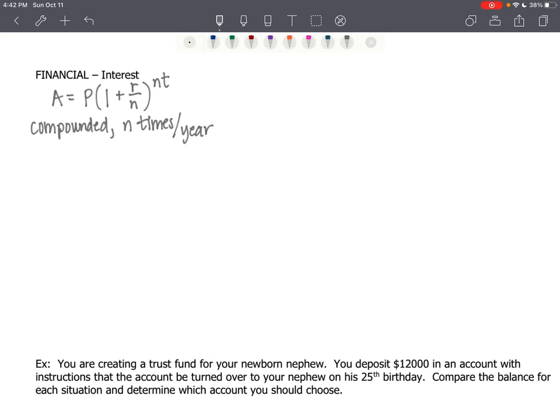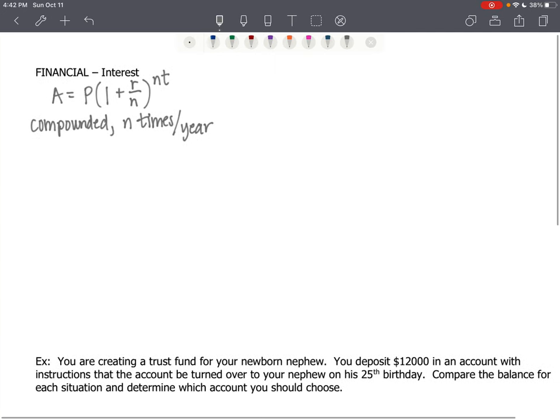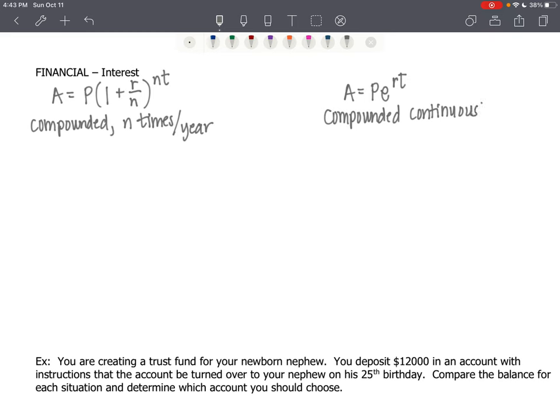You might remember that. Hopefully you do remember that, because that's a pretty major formula for college algebra. The other one is when your interest is compounded continuously, and that's A equals P times E raised to the RT power. So R times T is in the exponent. This is called the formula for compounded continuously.